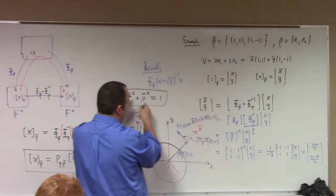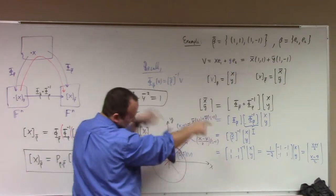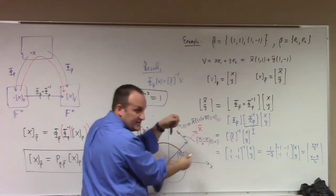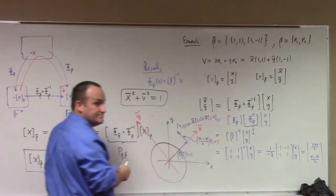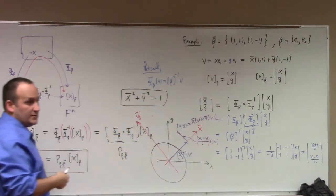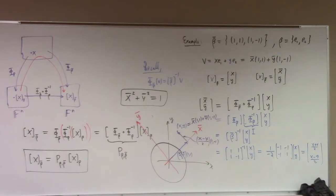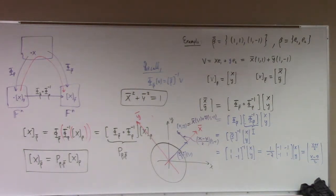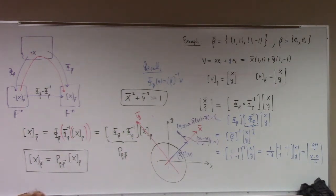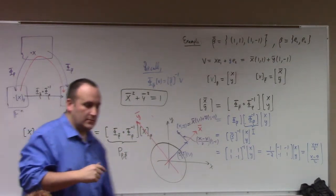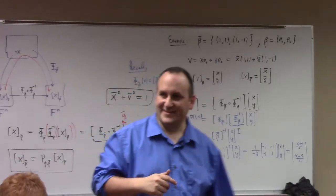So by changing coordinates, we could take a rotated ellipse and change it to a non-rotated ellipse — that sort of thing. That's where we're going with some of these ideas.